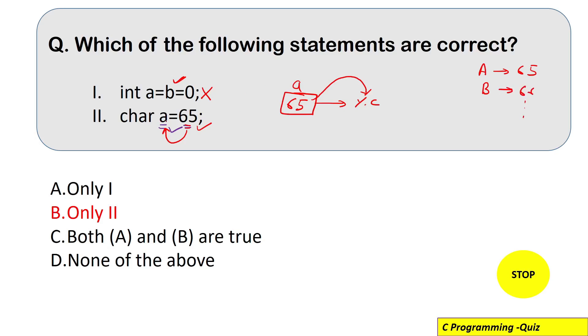So if you are writing char a equal to 65 that means this statement is correct. Why? Because internally inside the character variable only integer value that is ASCII value is actually getting stored. So if you directly write 65 also then also this is correct.